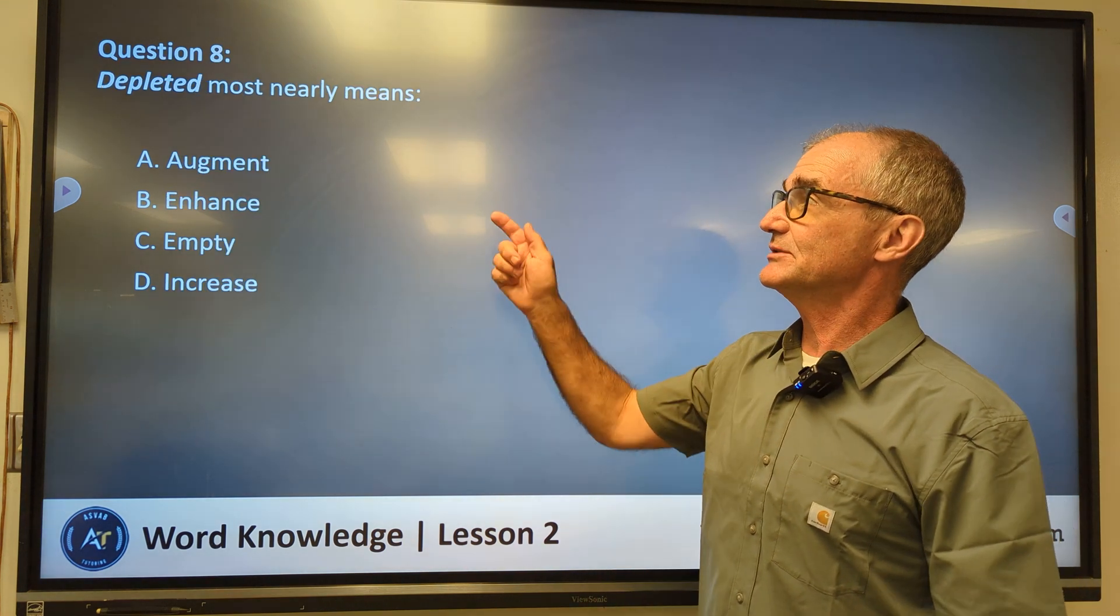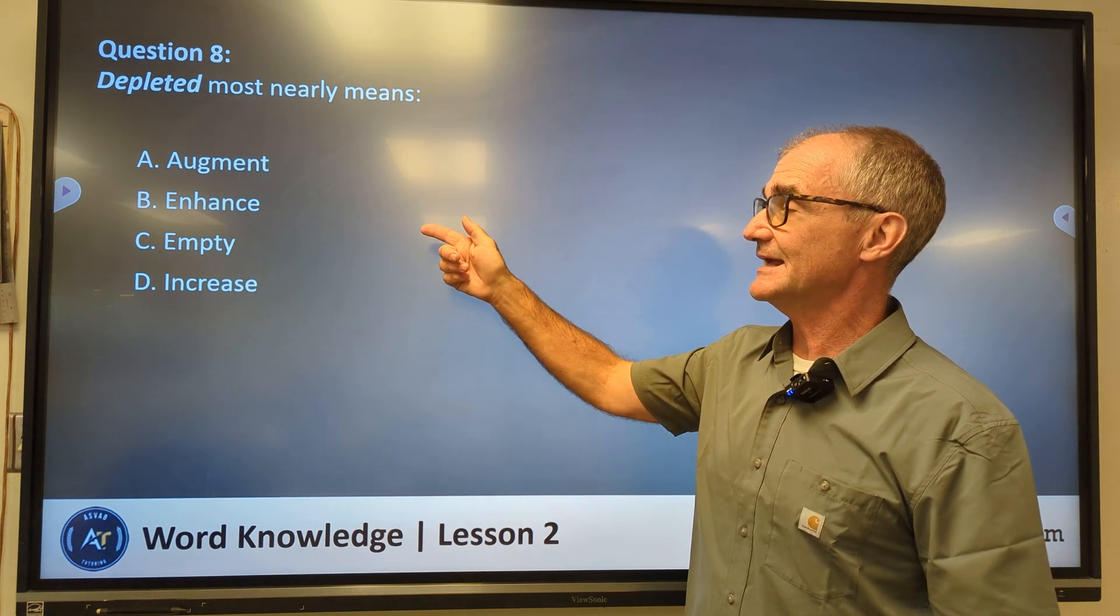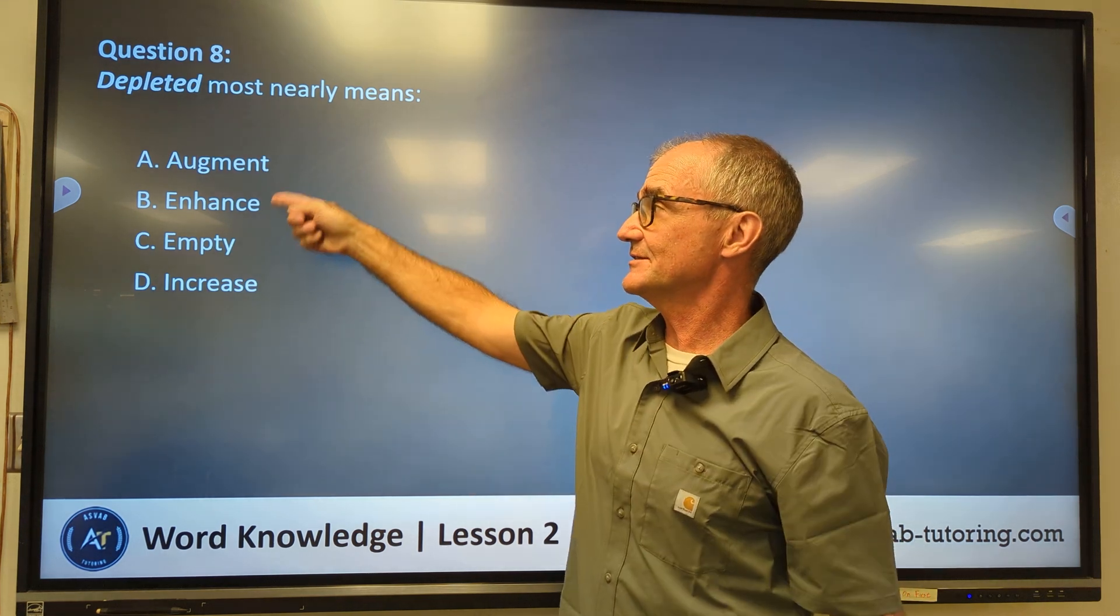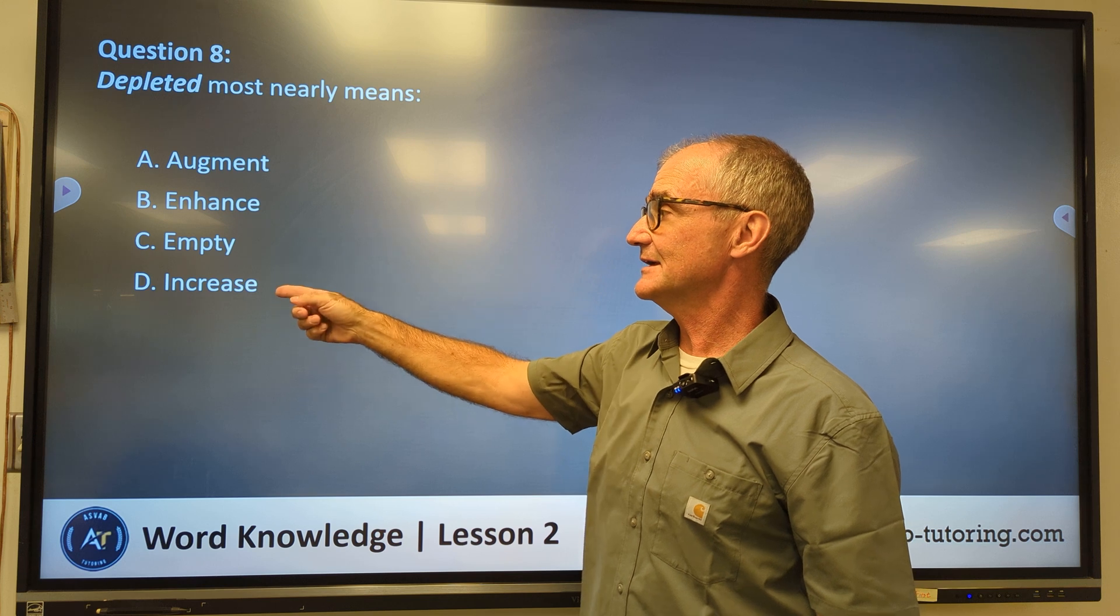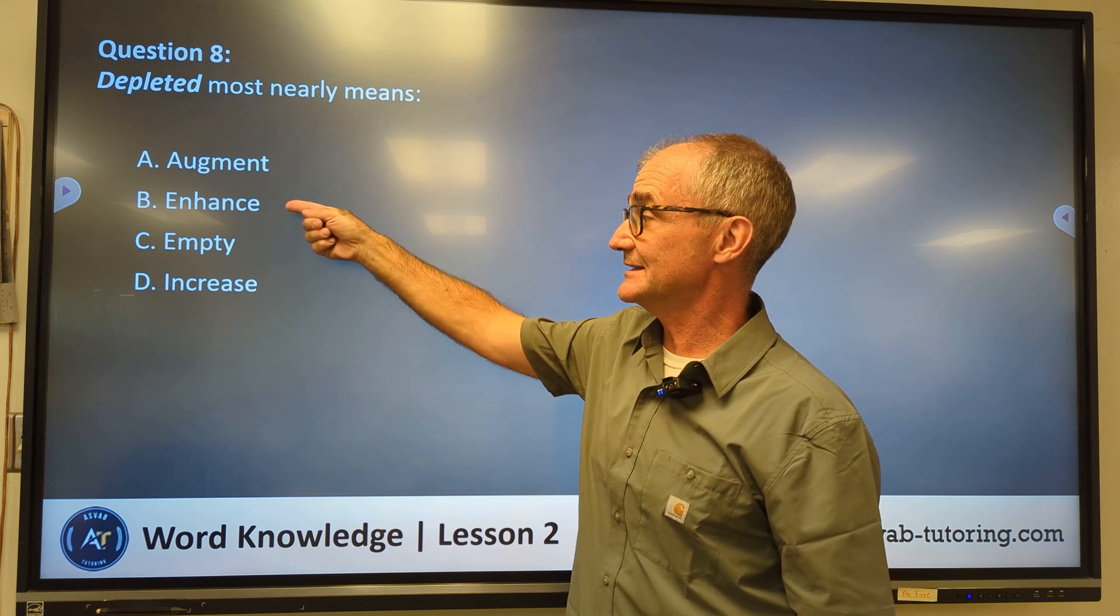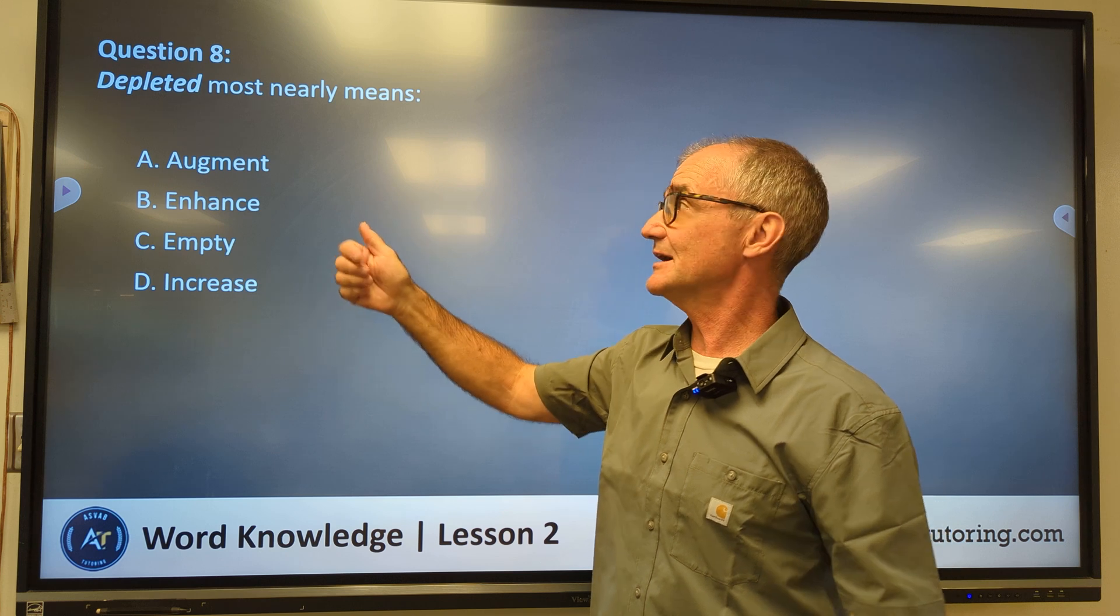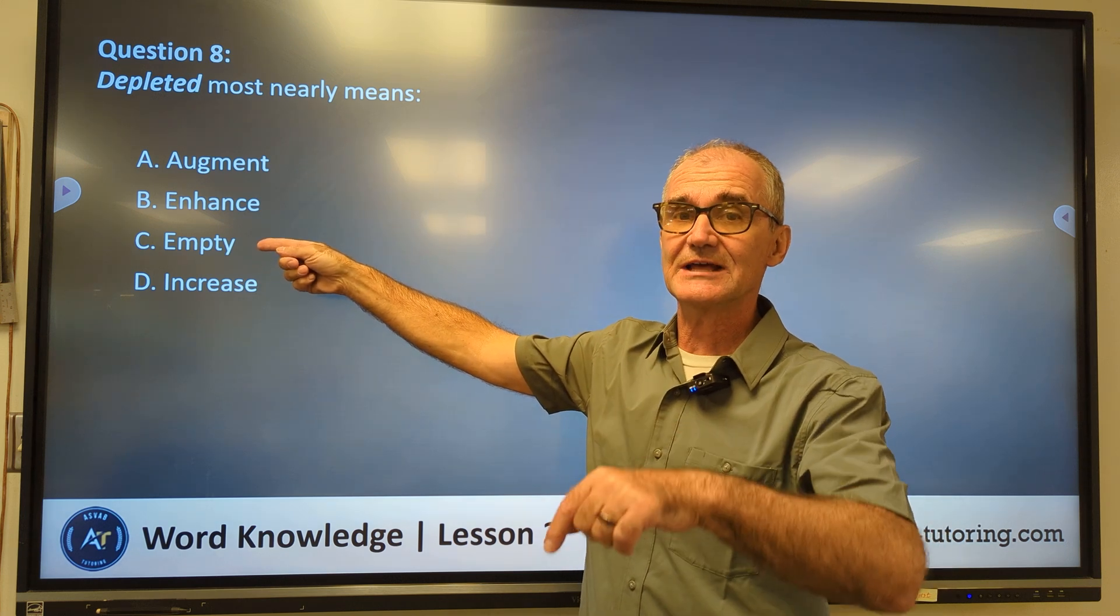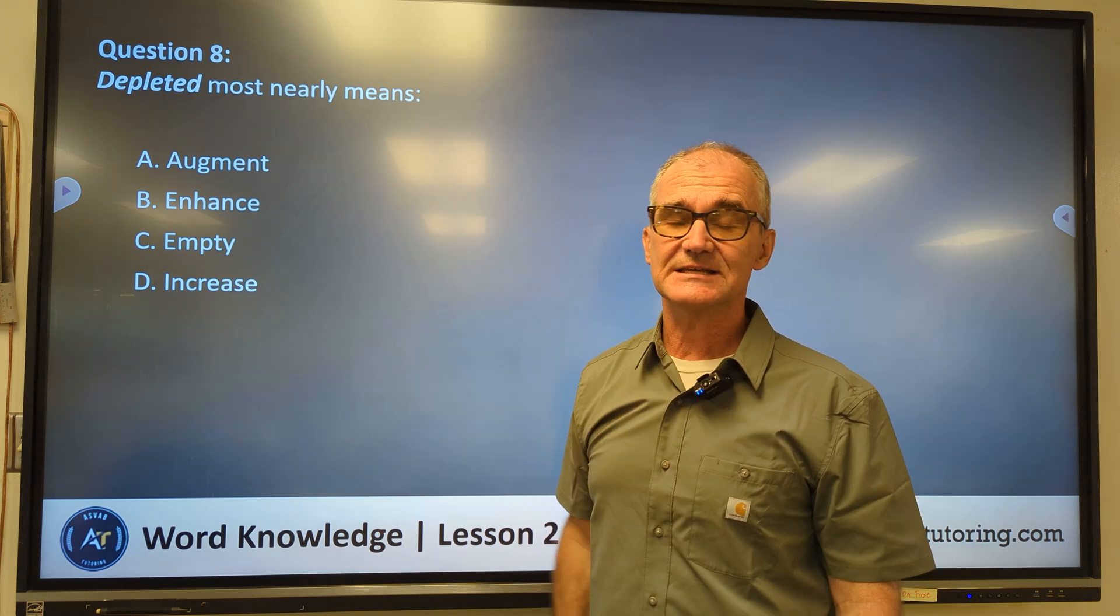Number eight, depleted most nearly means augment, enhance. Again, augment and enhance both mean to add to. So these two words mean the same thing, so it can't be one of those. Empty, increase. So augment, enhance, increase all mean the same thing. It's going up. Depleted means to go down or to empty out. Correct answer on eight, depleted is C, empty.